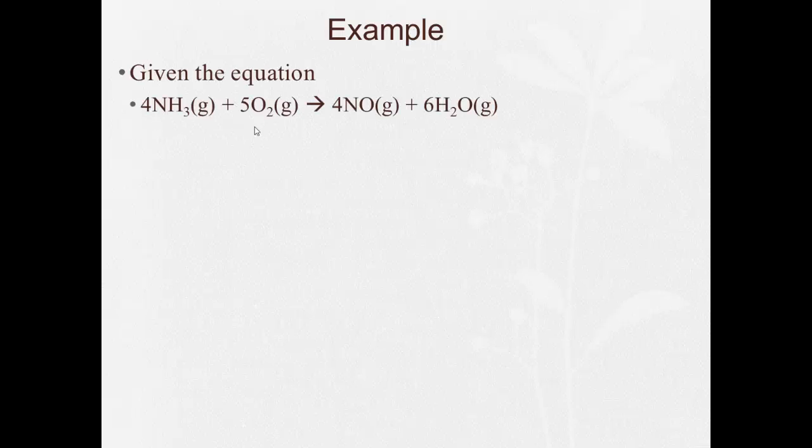Example, given the equation 4NH3 plus 5O2 yields 4NO plus 6H2O. 4 moles of NH3 will produce how many moles of H2O? Well, 4NH3 will produce 6 moles of H2O.